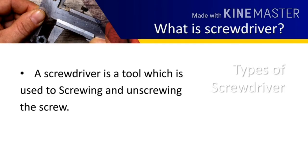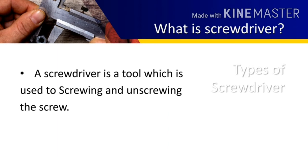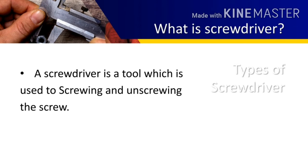First of all, what is a screwdriver? A screwdriver is a tool which is used to screw and unscrew screws. The screwdriver has three main parts: tip, shank, and handle. The tip of a screwdriver is made with a hardening process to resist wear, and the tips may be interchangeable and fit in the socket by some kind of mechanism or magnetically. Various sizes of tip can be used with the same handle or shank.